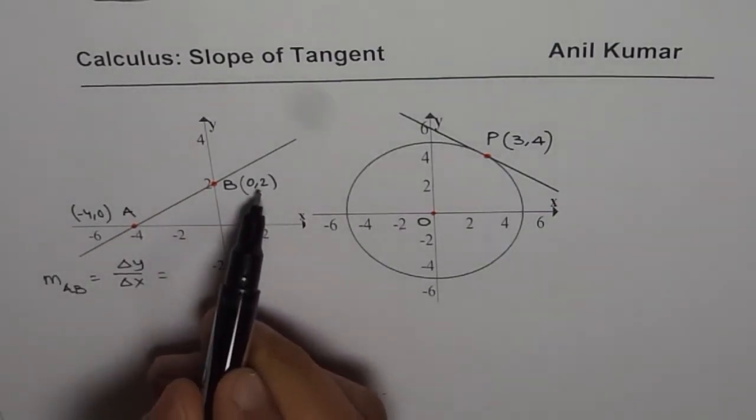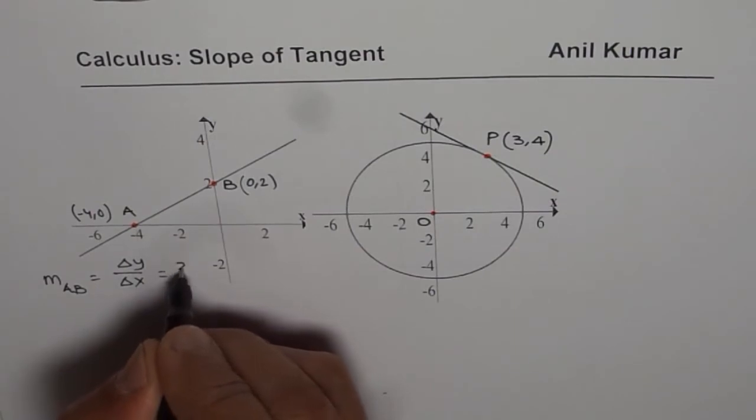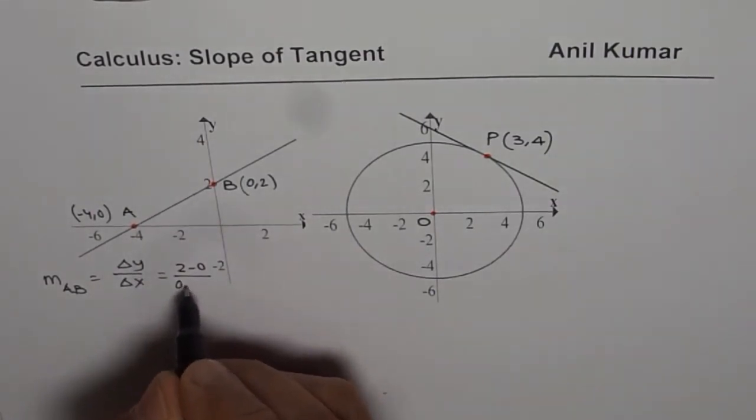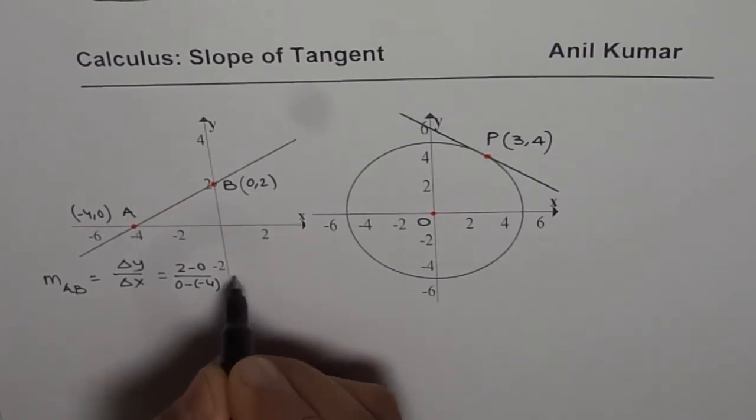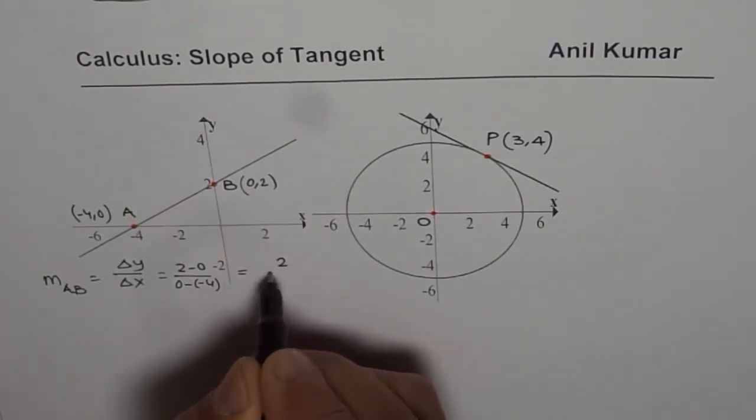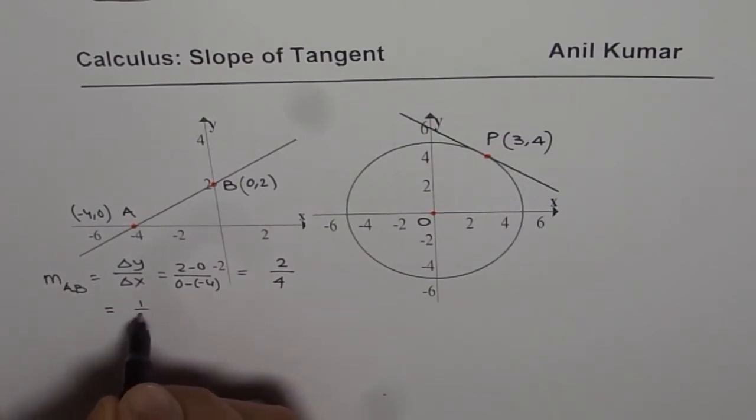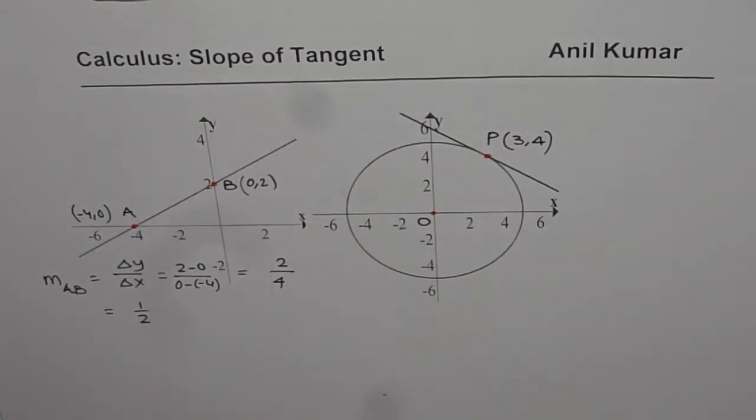So the difference in y values is 2 minus 0 and the difference in x values is 0 minus minus 4. That gives us 2 over 4 or it gives us a slope of half. So that is the slope for the given line AB.